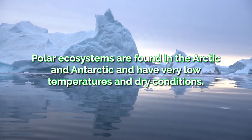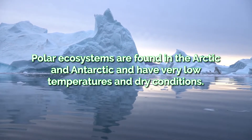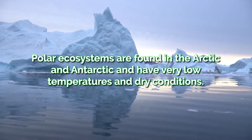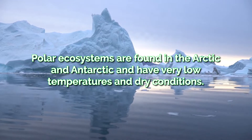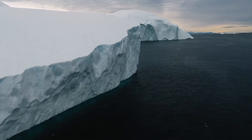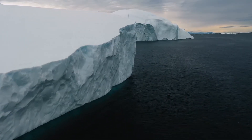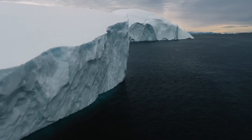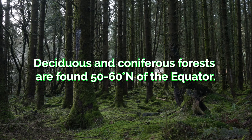Polar ecosystems are found in the Arctic and Antarctic. They have very low temperatures and dry conditions. The main examples are Greenland and Antarctica.